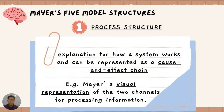There are also Mayer's five model structures, which can be used to improve our teaching techniques. The first one is called the process structure, which is the explanation of how a system works and can be represented as a cause-and-effect chain. This is similar to the CTML model we discussed earlier — from the information we get from our senses to the new knowledge. Another example is the visual representation of the two channels in processing our information.